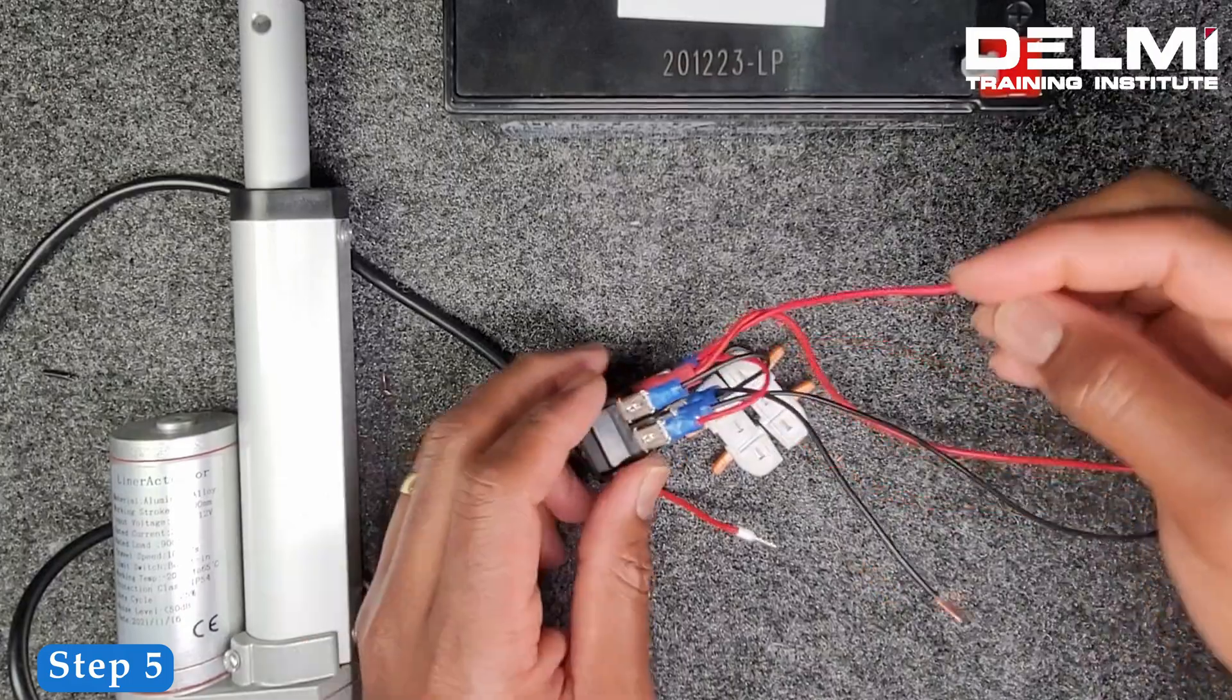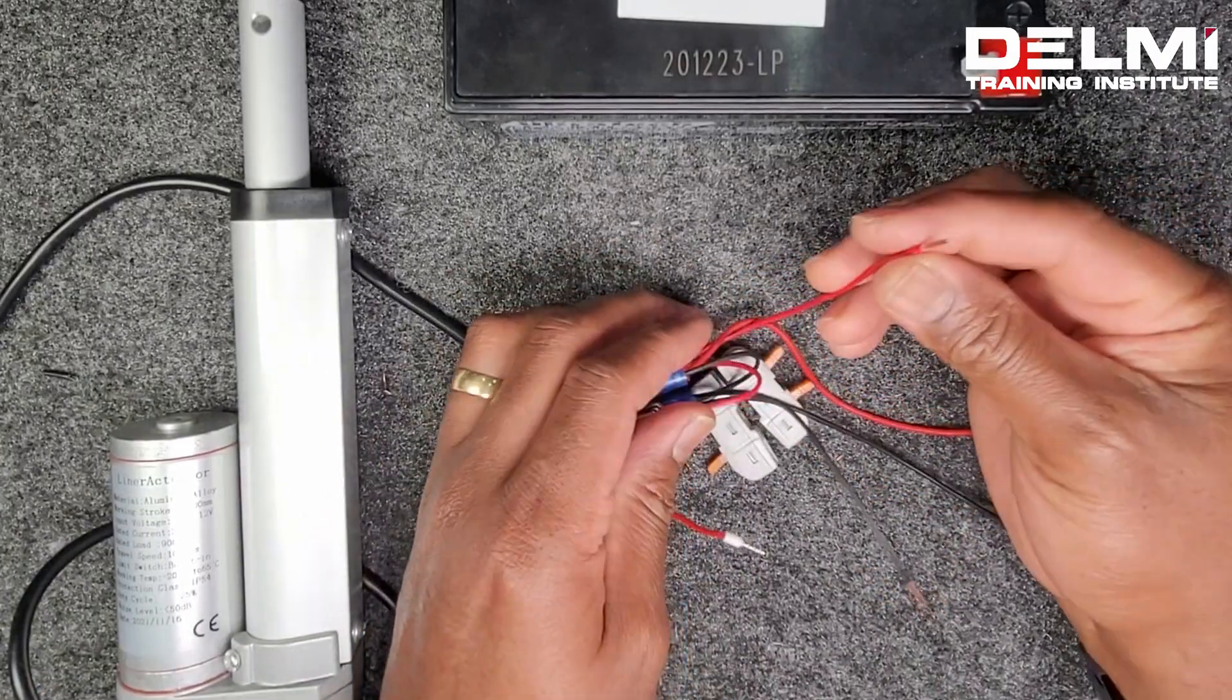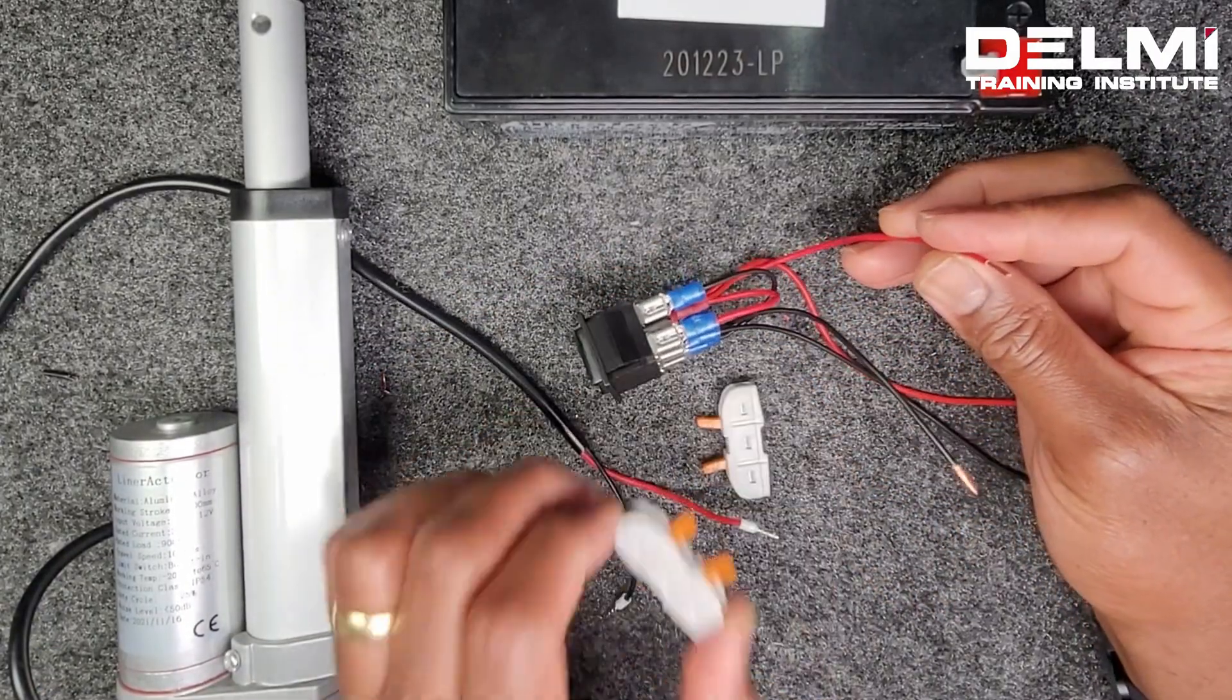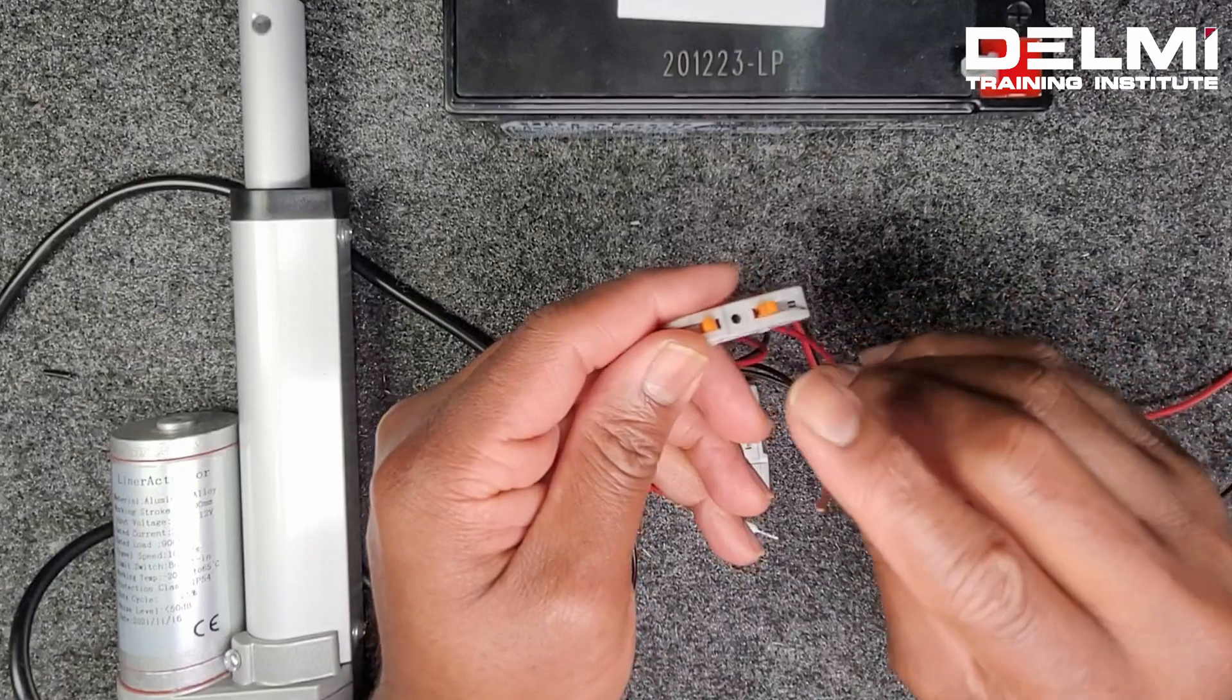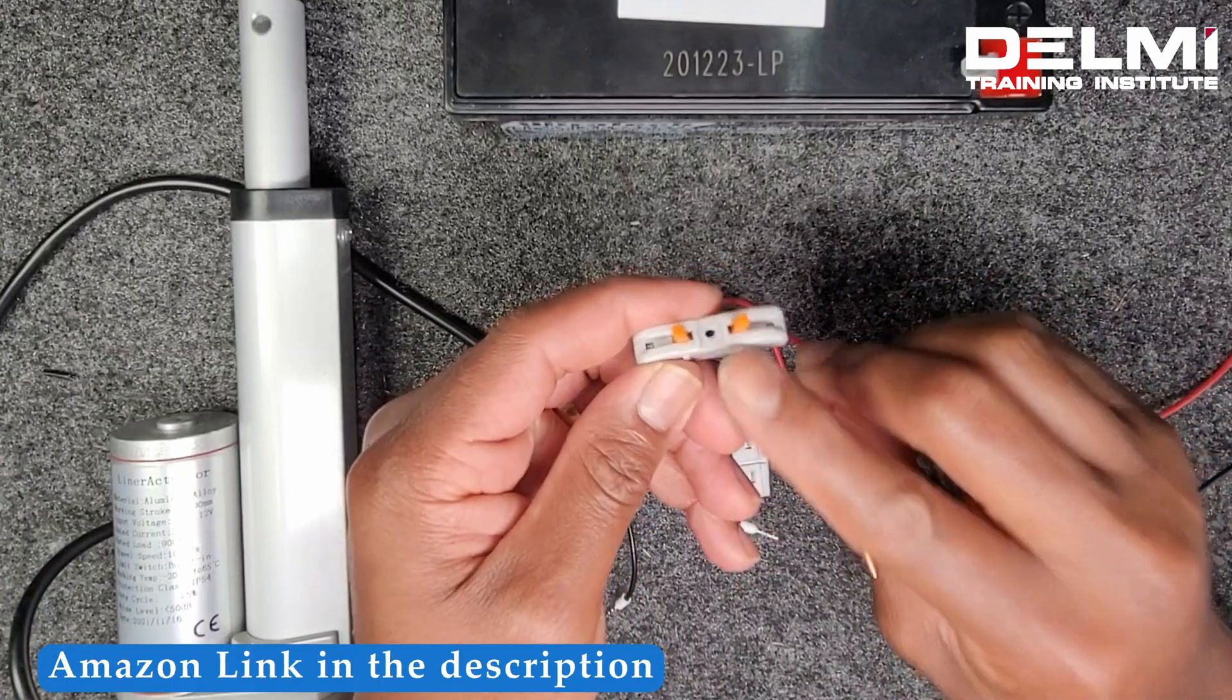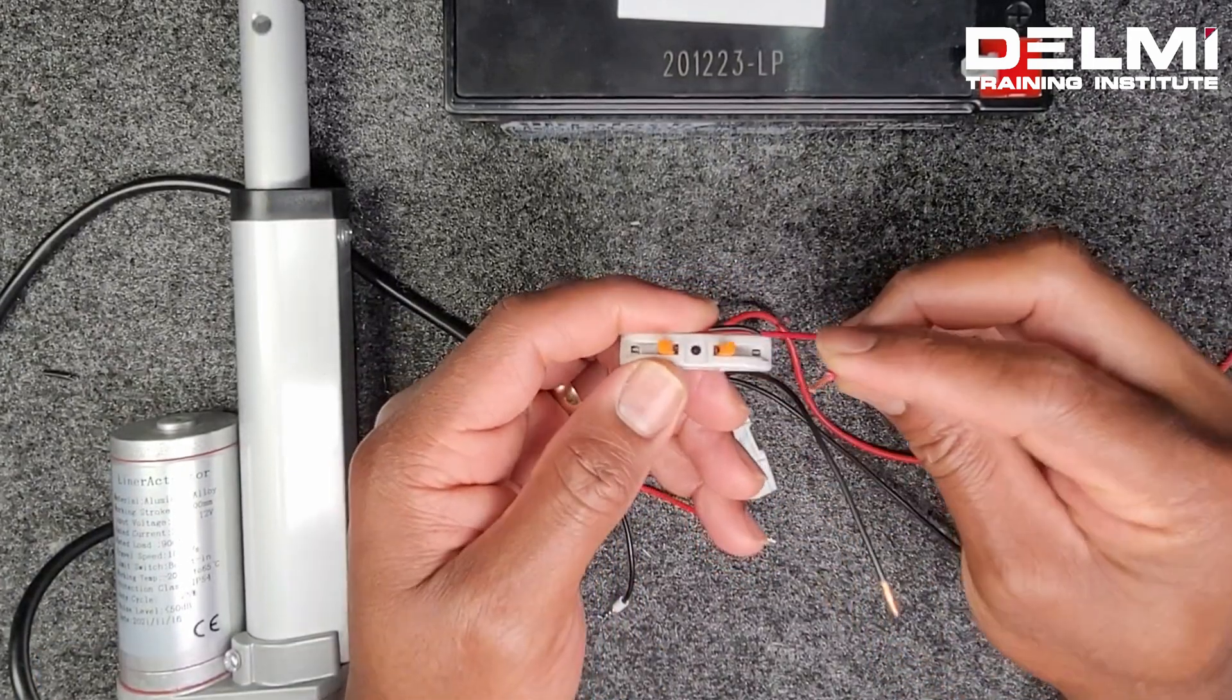And step five, connect the positive to your actuator positive source. I'm using a splice connector. I'm going to leave the link in the description below.